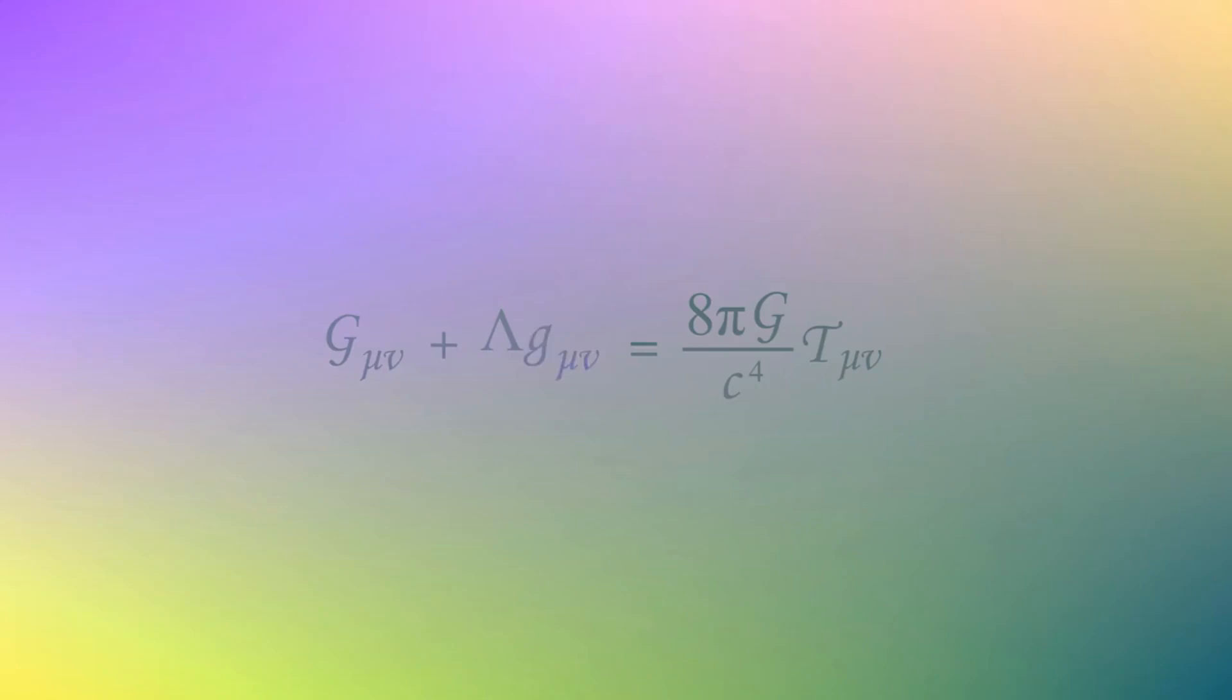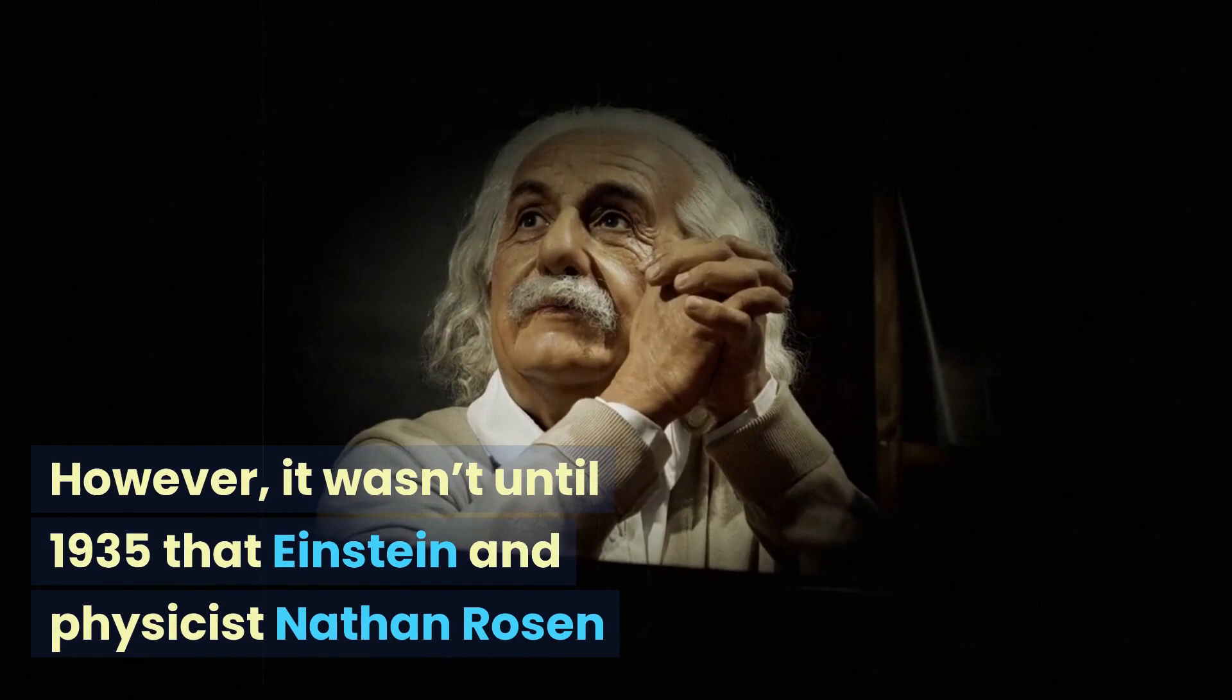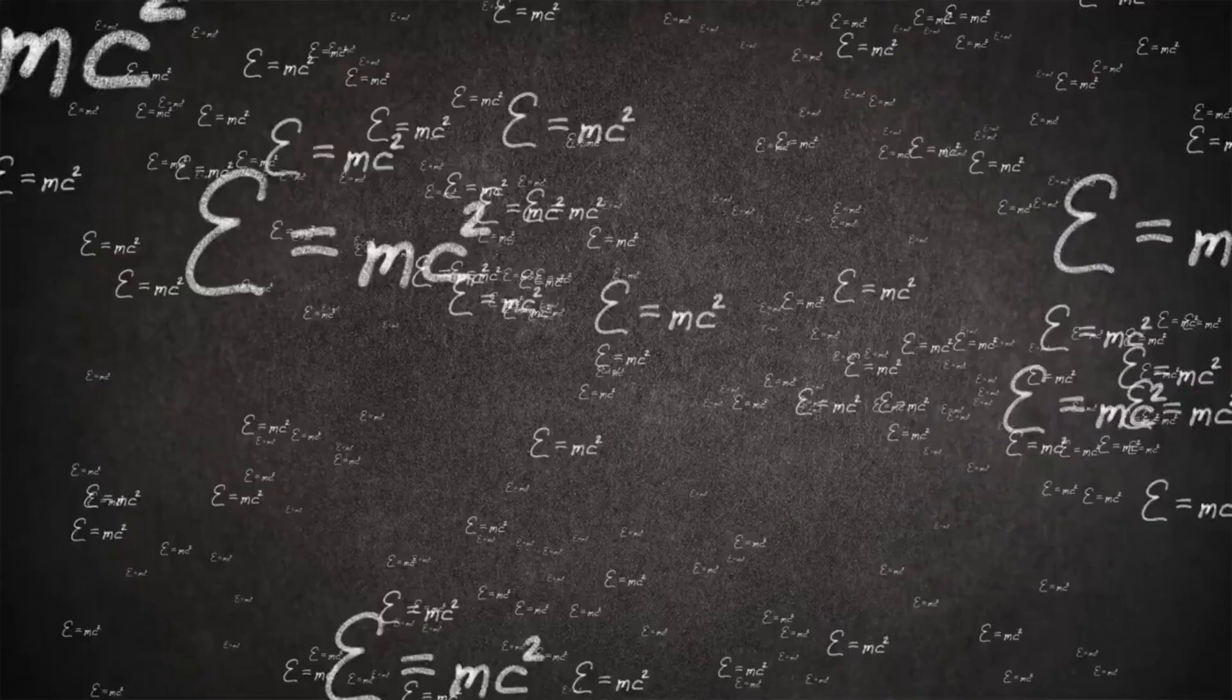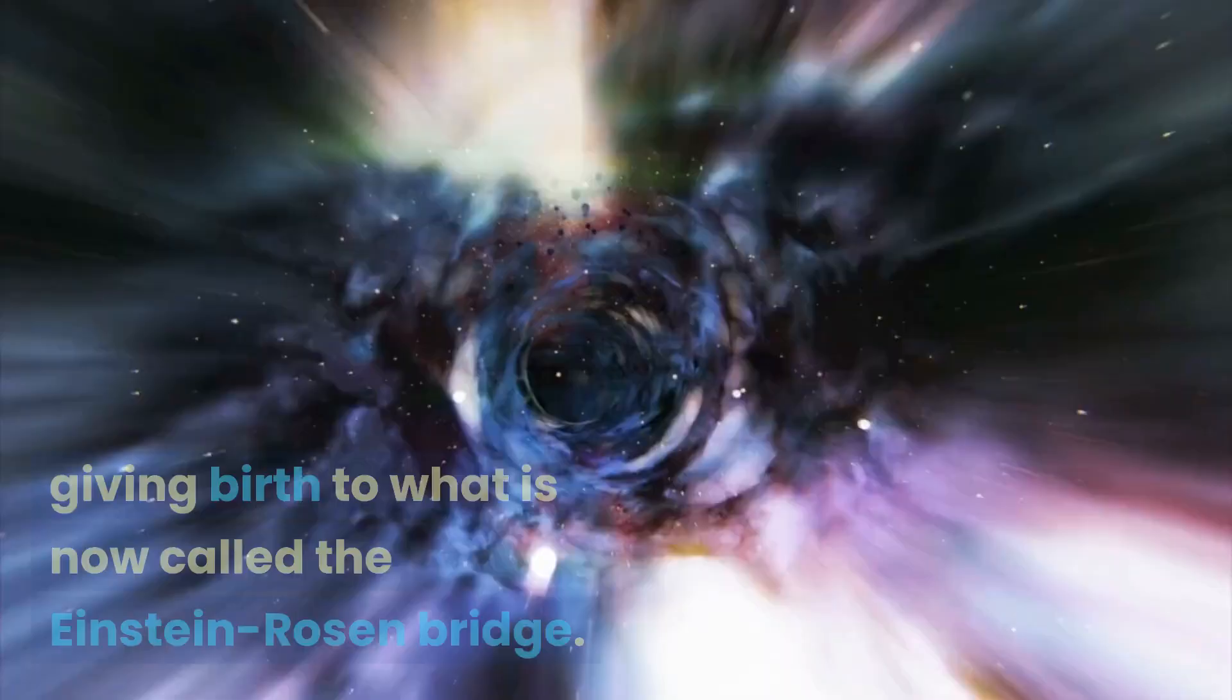However, it wasn't until 1935 that Einstein and physicist Nathan Rosen used the theory of general relativity to elaborate on the idea, giving birth to what is now called the Einstein-Rosen Bridge.